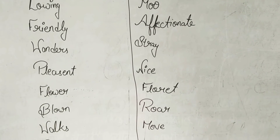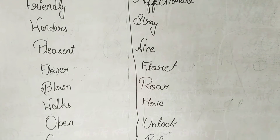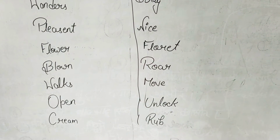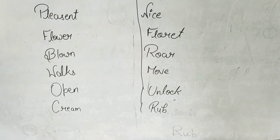Nice means flowers. Floret means blown. Roar means walks. Move means open. Unlock means cream. Cream means rub.